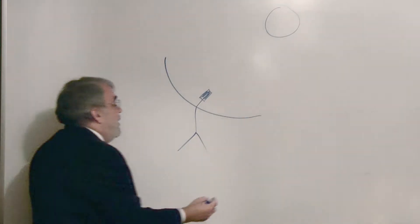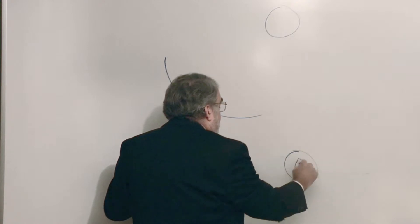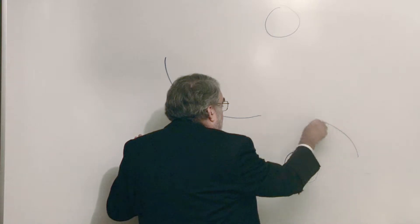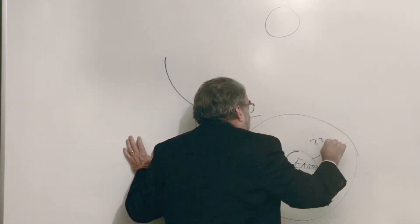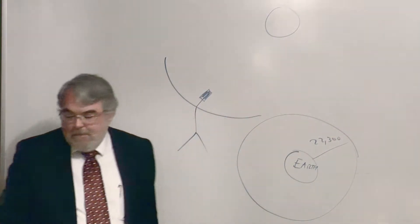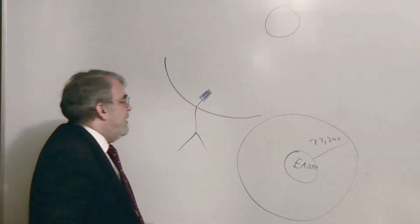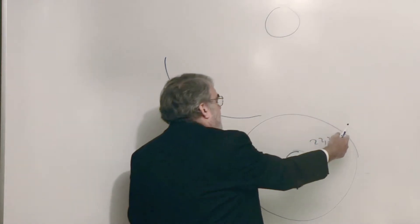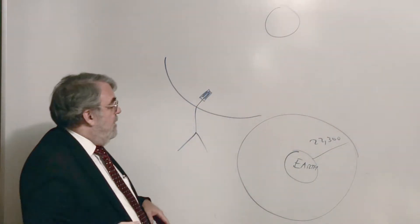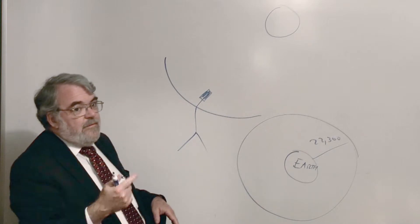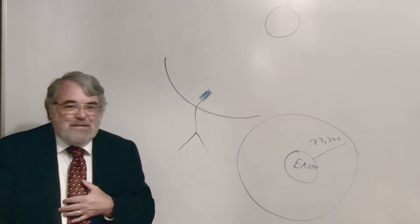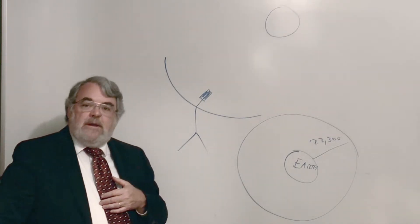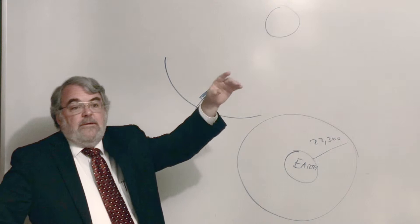22,300 miles. So if this is the Earth, and if you orbited at an altitude of 22,300 miles, I think that's the number, it's pretty close to that, then it turns out the time for one orbit is 24 hours. And of course, the Earth spins in 24 hours, so what they do is they've placed communication satellites above the equator of the Earth.